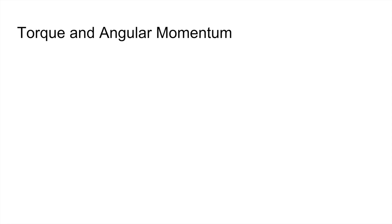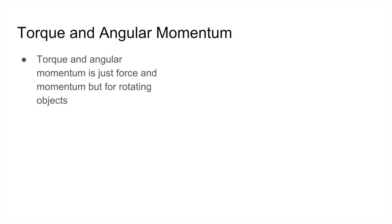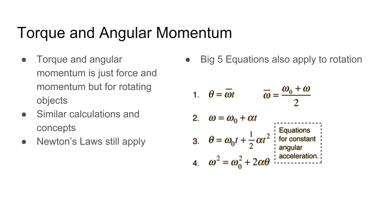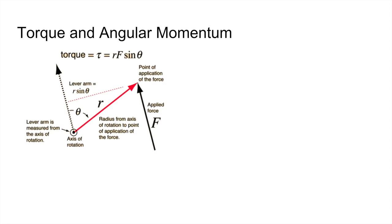Torque and angular momentum is perhaps the most important topic in mechanics because it combines everything previously learned. It's just force and momentum but for rotating objects — similar calculations and concepts apply, and Newton's three laws still hold. There are big five equations for rotation as well, except with θ instead of x, ω instead of v, and α instead of a, where θ is angular displacement, ω is angular velocity, and α is angular acceleration. If you know three variables, you pick the equation missing the one you don't care about.